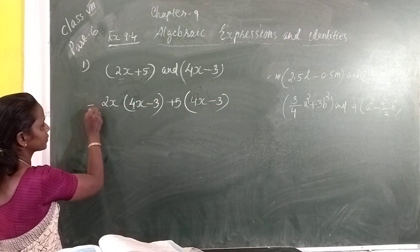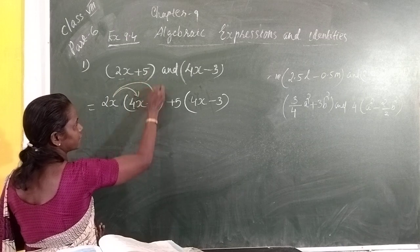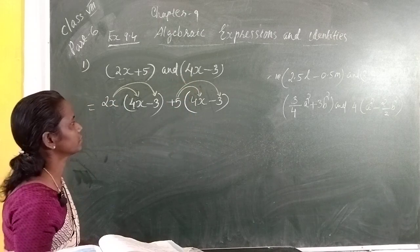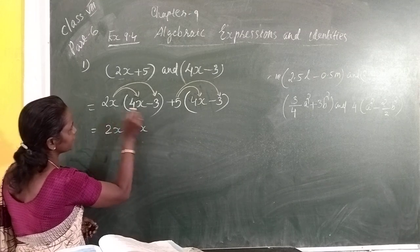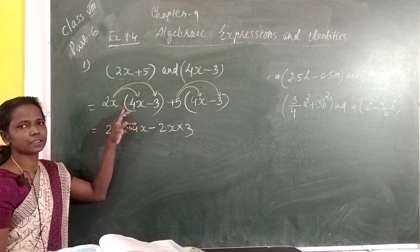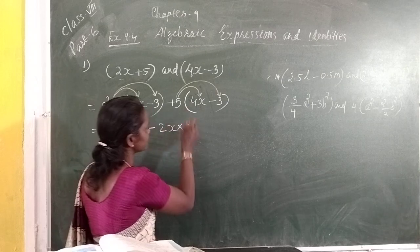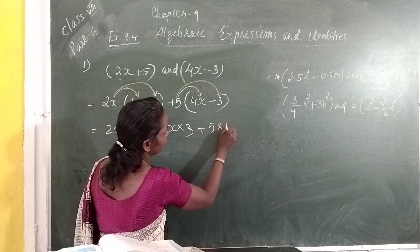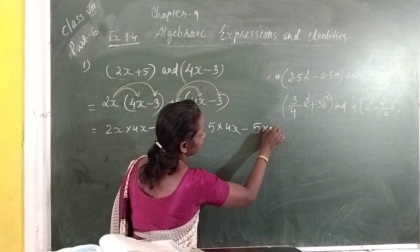Next step: 2x multiplies first time and also second time, then the second term multiplies first time and second time. So we write 2x into 4x, then 2x into minus 3, then 5 into 4x, then 5 into minus 3.